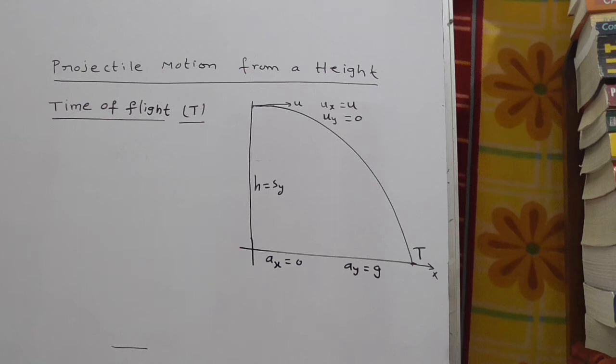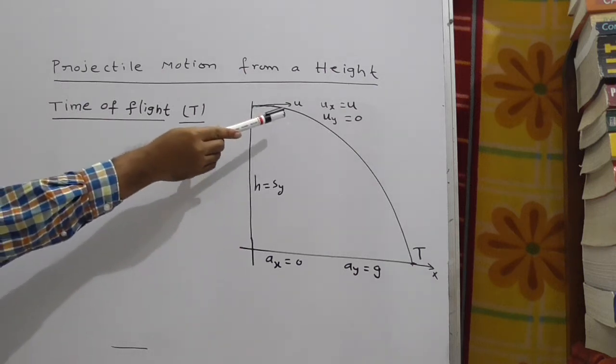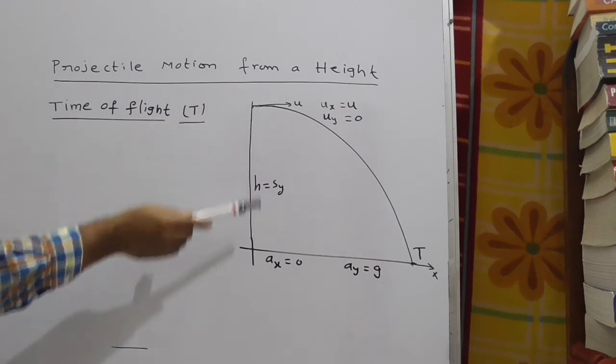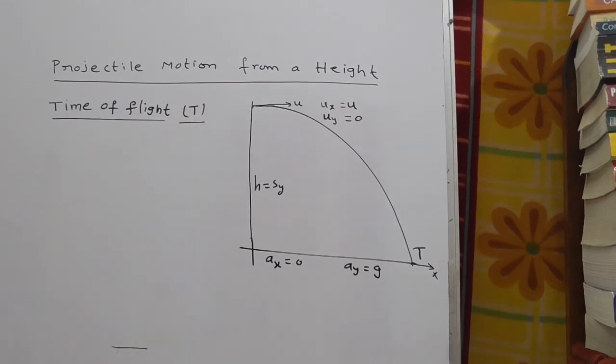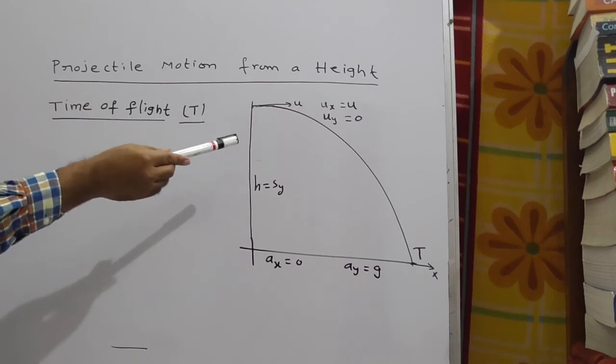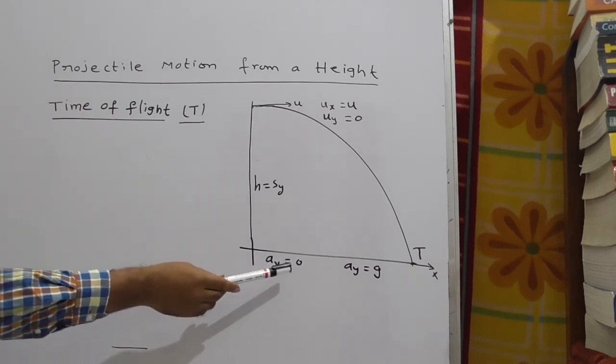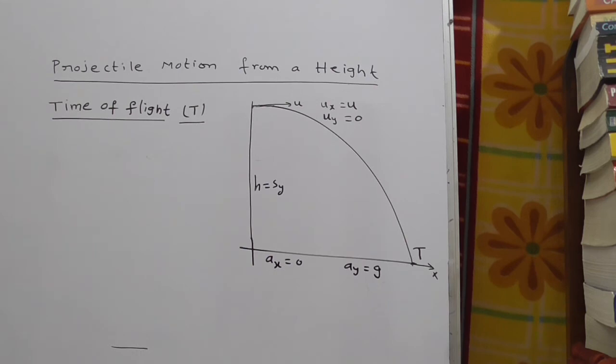So completely with respect to y, we have to derive. Observe here ux, that is initial velocity with respect to the horizontal. You can take it as u. uy is 0 and ax equal to 0, ay equal to g.